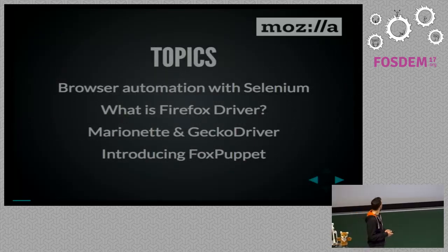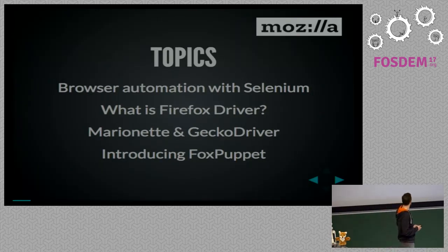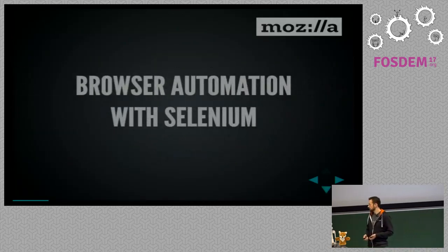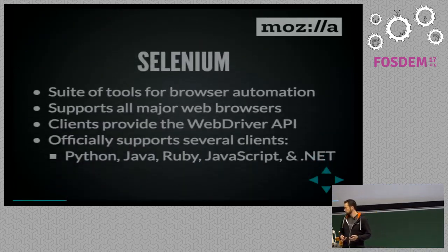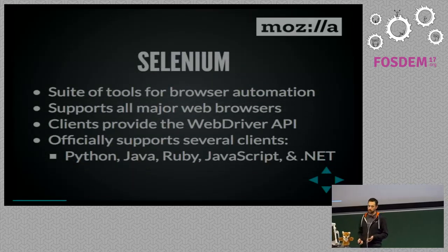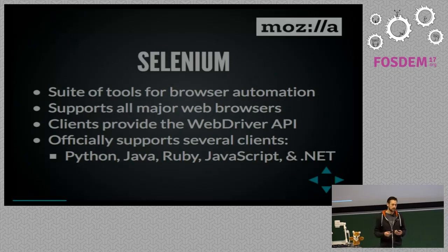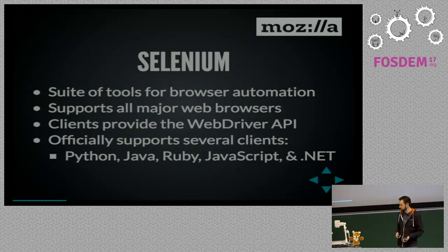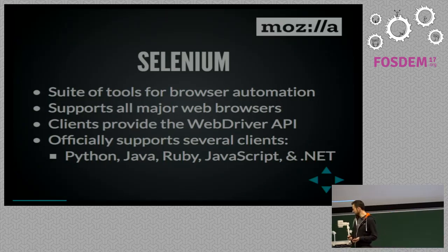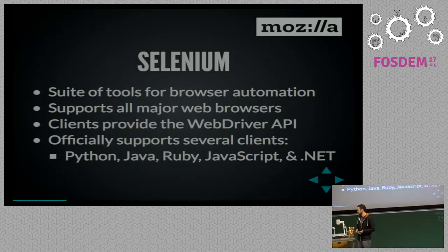Topics I'll be covering: browser automation with Selenium, what is the Firefox driver, what is the successor for Firefox driver, and then finally I'll be introducing Firefox driver. So, Selenium is a suite of tools for browser automation. It's most commonly used to write tests for web applications, but that's not its only use — it's actually an API for controlling browsers. It simulates a user interacting with a browser, which opens up lots of possibilities, from playing games in the browser to playing instruments online, but most commonly it's for testing.